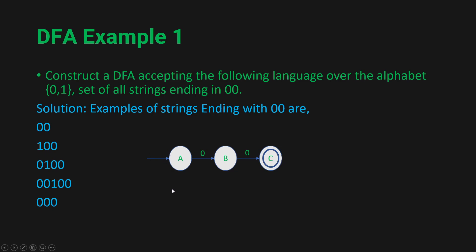Now for the transitions on 1: in state A, if we get a 1, we stay in state A. In state B, if we get a 1, we come back to state A. In state C, if we get a 1, we also come back to state A. And in state C, if we get a 0, we stay in state C itself. So this completes our DFA.